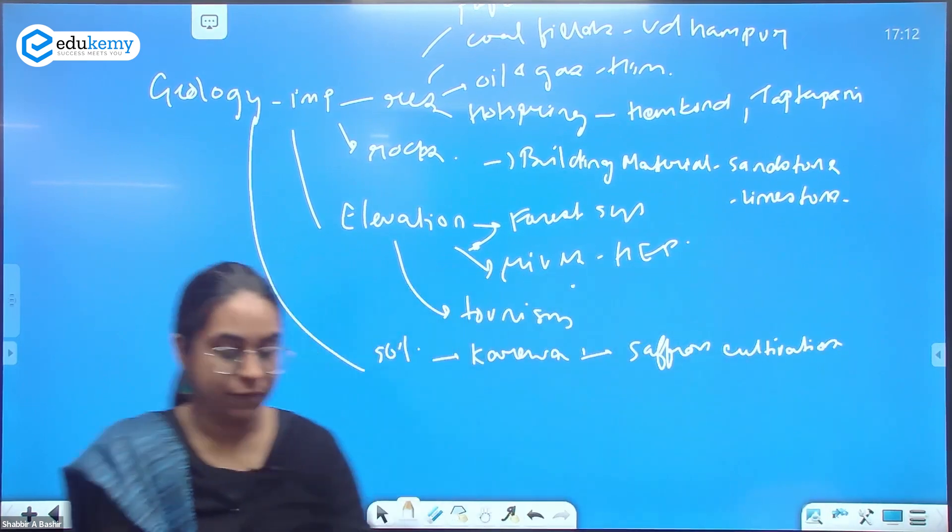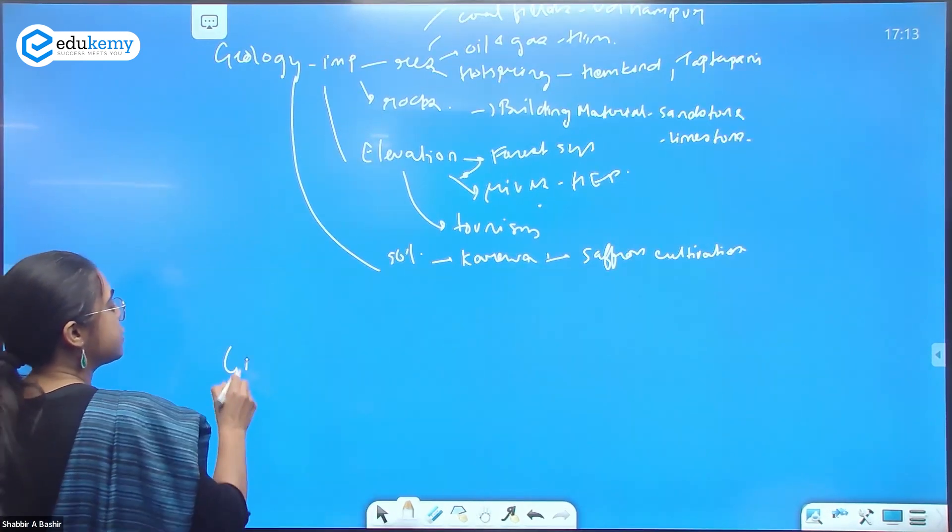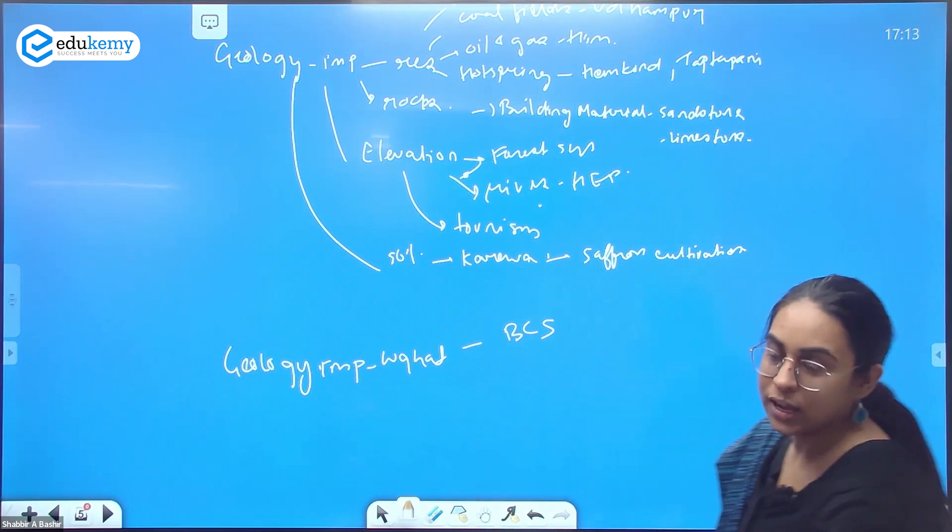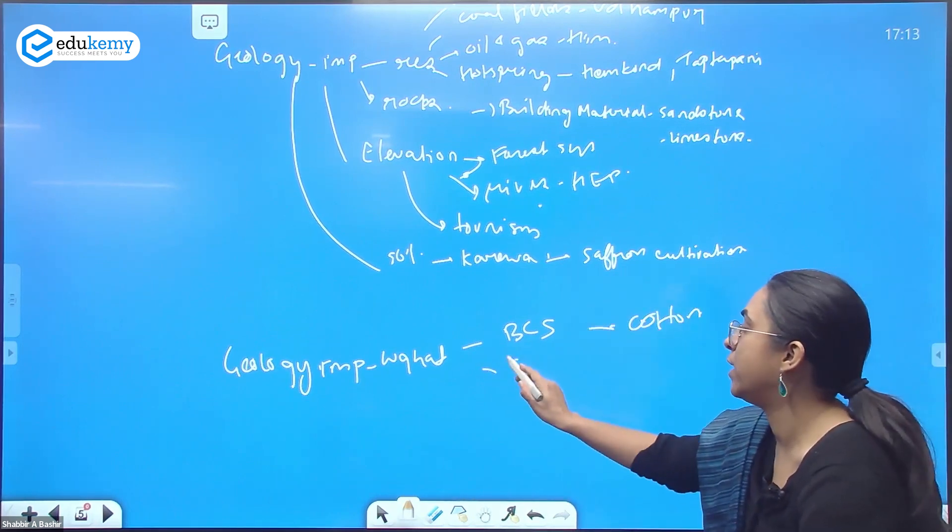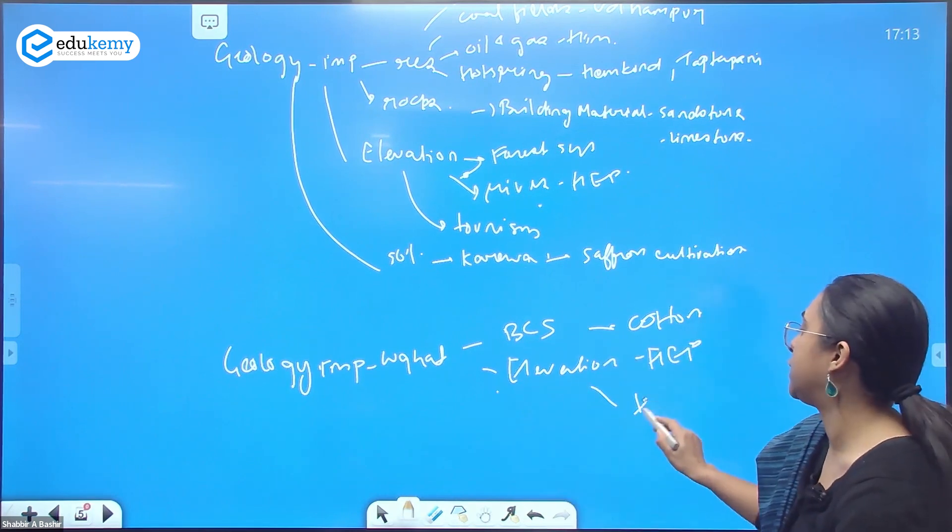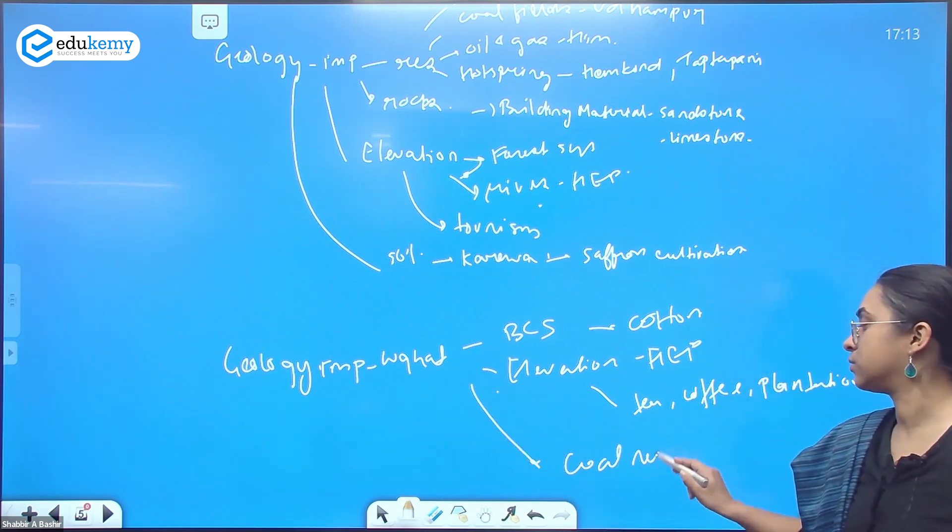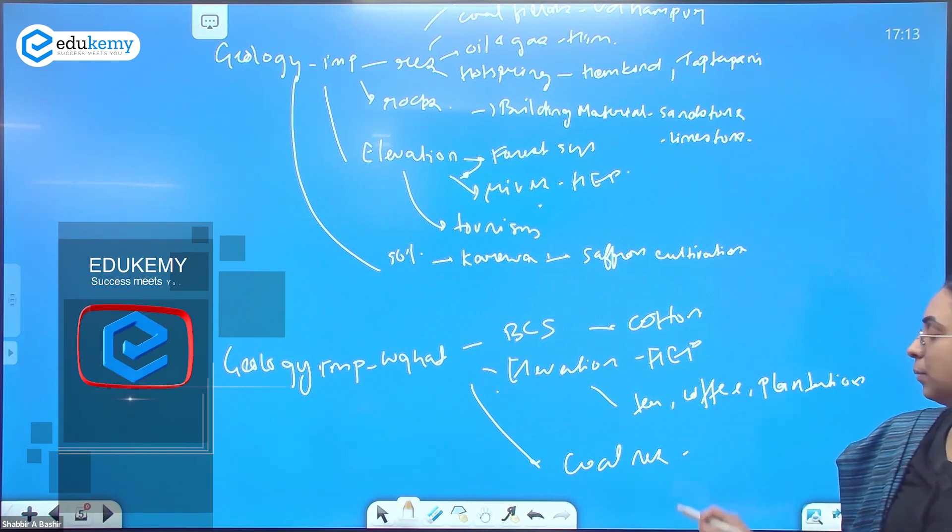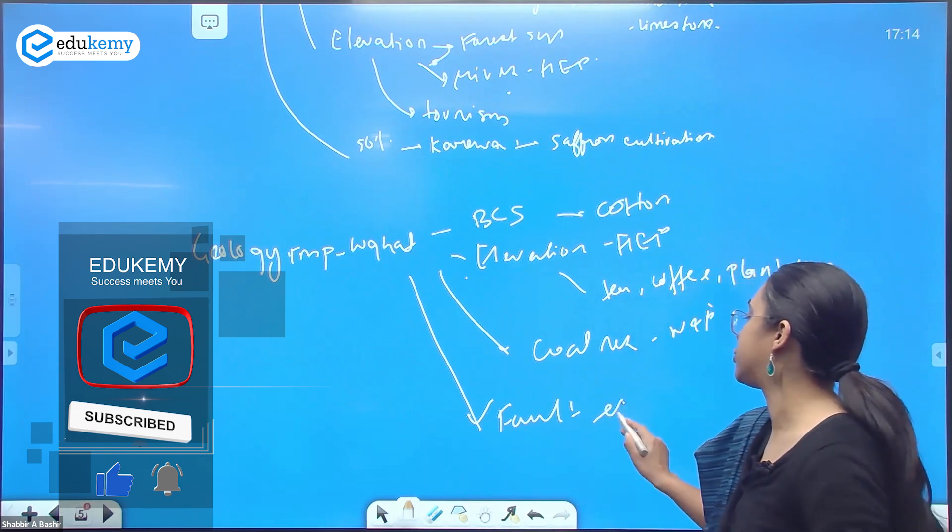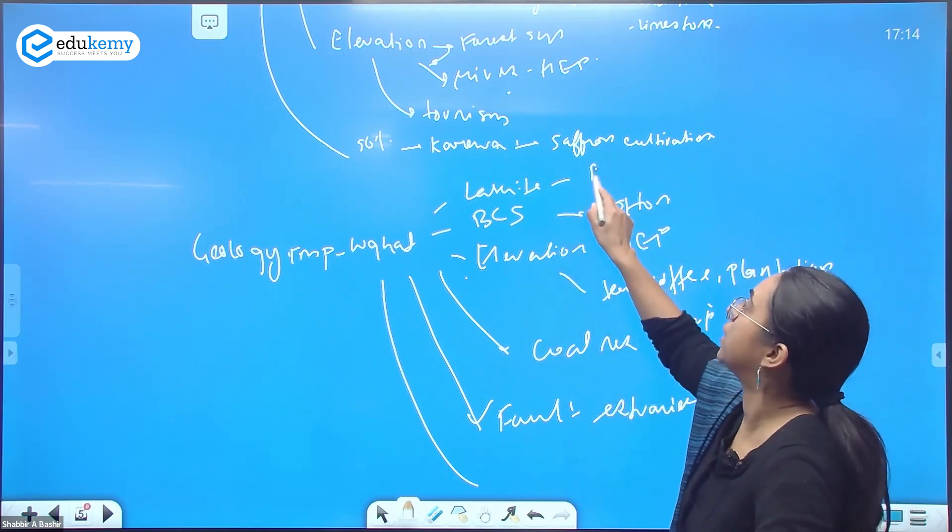If I talk about geology and importance for Western Ghats, we have black cotton soil, so write cotton. There is elevation, so you have HEP potential here too. Because of elevation you also have tea, coffee, plantation crops. Because along with the rifting you also have coal resources along your Narmada and Tapi. Because it's a fault zone, it is like a sharp slope. You have estuaries. Because it is laterite soil, this is used for brick kilns. More of them in Western Ghats.